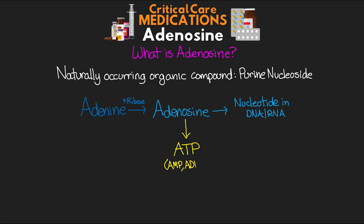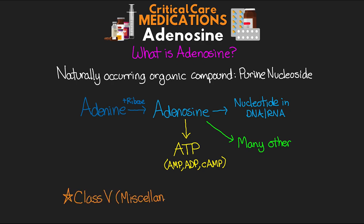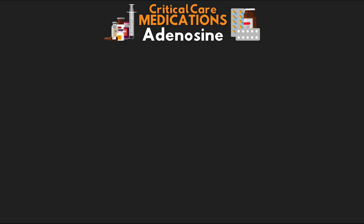Adenosine also makes up our monophosphate and diphosphate versions that our body uses, and in addition we have cyclic AMP, which is essentially adenosine monophosphate — again coming from the same adenosine. There are many other forms and uses throughout our body as well. As for the medication as we know it, it is classified as a class 5, or miscellaneous, antiarrhythmic.